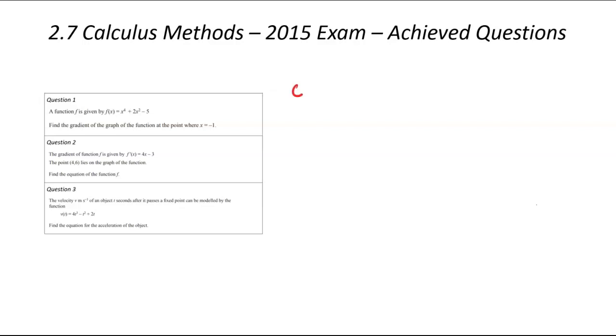Let's get straight into question number one. A function is given by this equation: x⁴ + 2x² - 5. We've been asked to find the gradient at the point where x equals minus 1. We've got the original equation, but we've been asked about the gradient, so we need to differentiate to be able to find this.